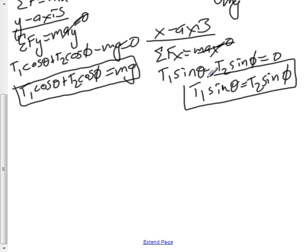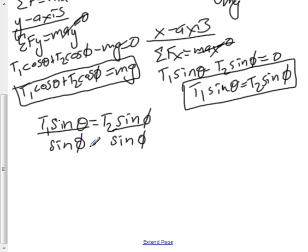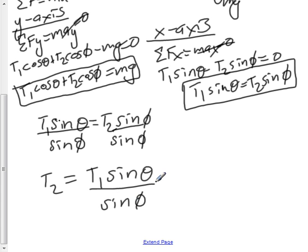Now with this relationship, we can also conclude whether or not T1 is greater than or equal to T2. If we use this relation, T1 sin theta equals T2 sin phi, and divide both sides by sin phi, we have T2 equals T1 sin theta over sin phi.